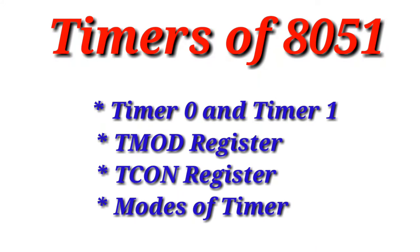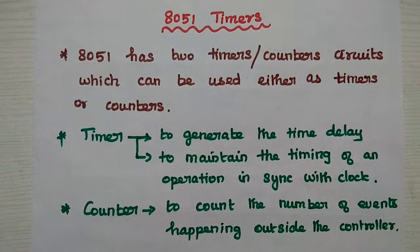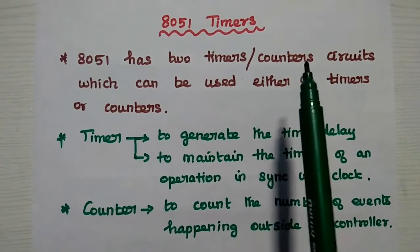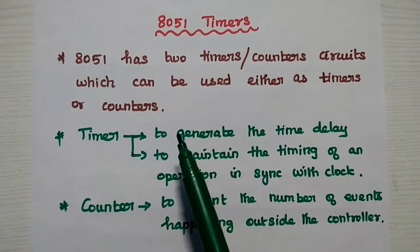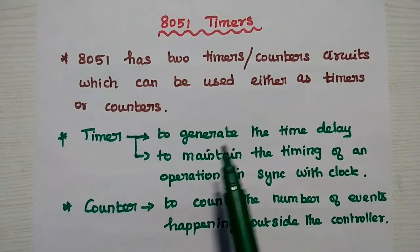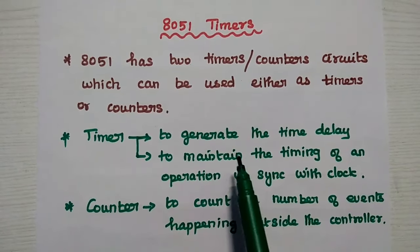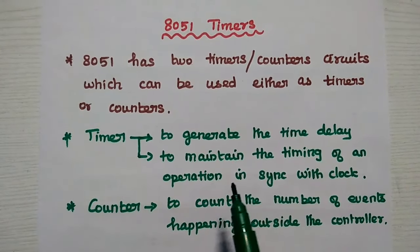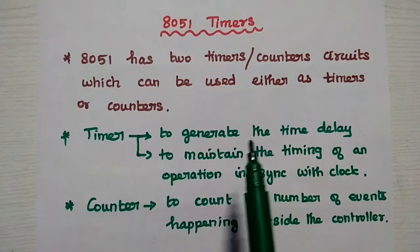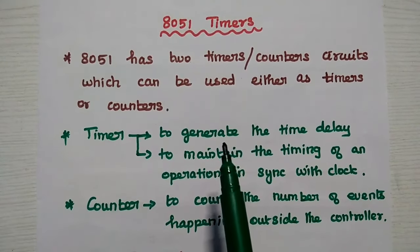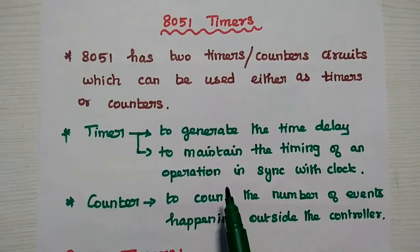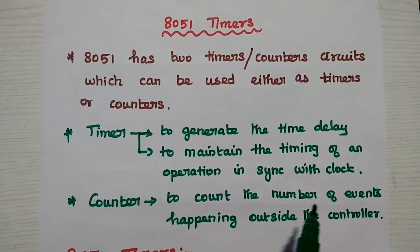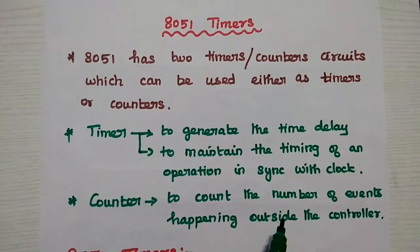Now we are going to discuss the timers of AT51 microcontroller in detail. AT51 has two timer circuits which can be used either as timers or counters. A timer is used to generate time delay and also to maintain the timing of an operation in synchronous with the system clock. There are two major functions: one is to generate time delay, another is to maintain the timing of an operation. A counter is used to count the number of events happening outside the controller.